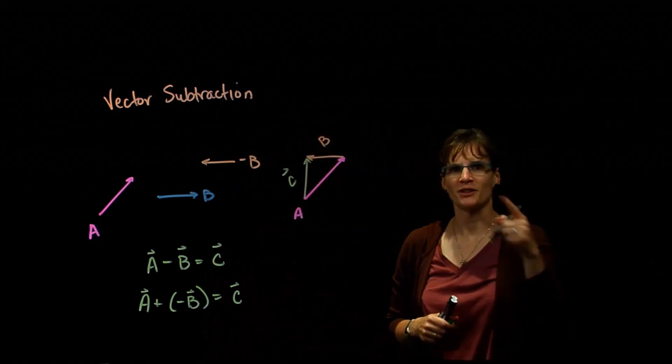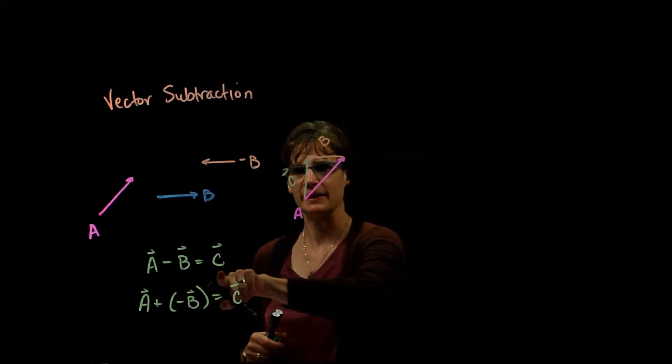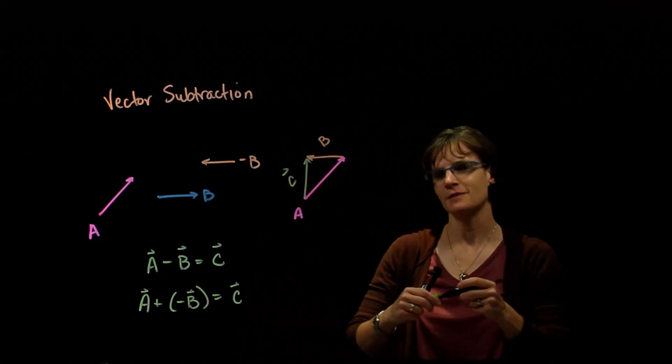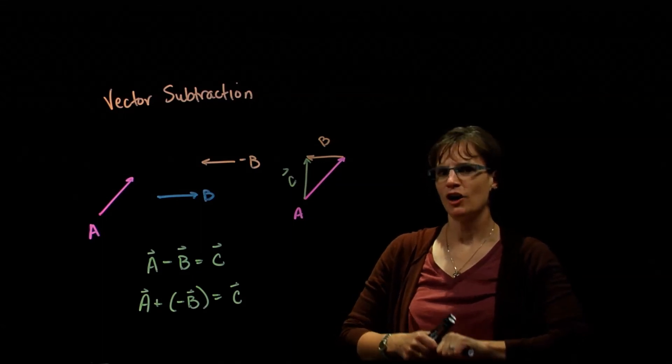So my resultant vector C, vector A minus B, is shown by the green vector C.